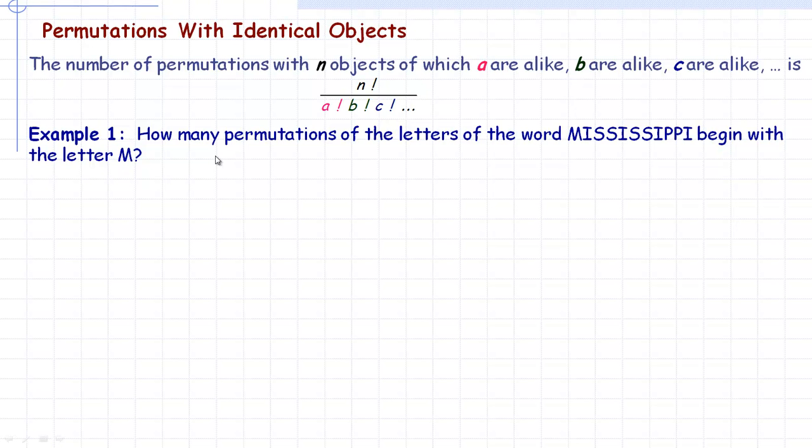In the example on this page, it says, how many permutations of the letters in the word Mississippi begin with the letter M? Well, now when it says begins with the letter M, that means the M has to be the beginning, so it's kind of like the M is taken out of this, and now all we're doing is saying, okay, the M's got to be the beginning, so there's only one way to do that. So we're really just arranging the other letters, the I-S-S-I-S-S-I-P-P-I.